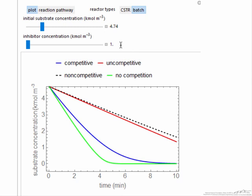So here, these diagrams give us an idea for different types of inhibition of enzyme reactions, what effect this has on the use of the substrate, and we look at it for two types of reactors.